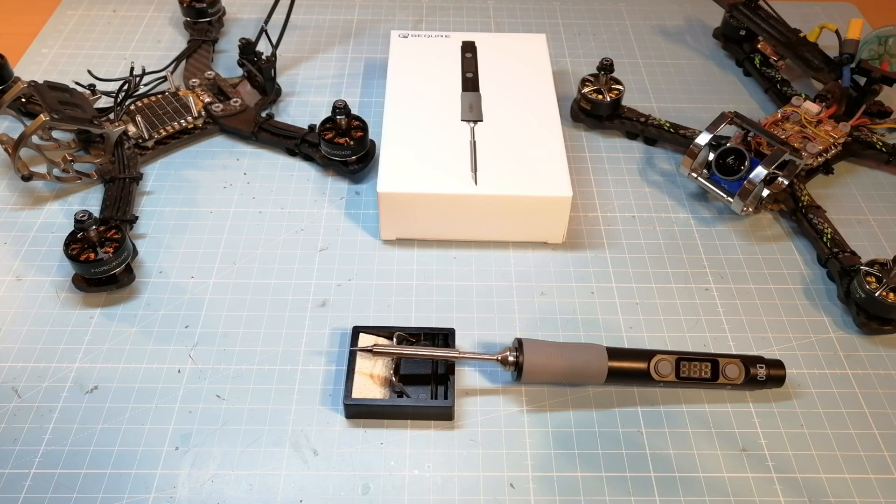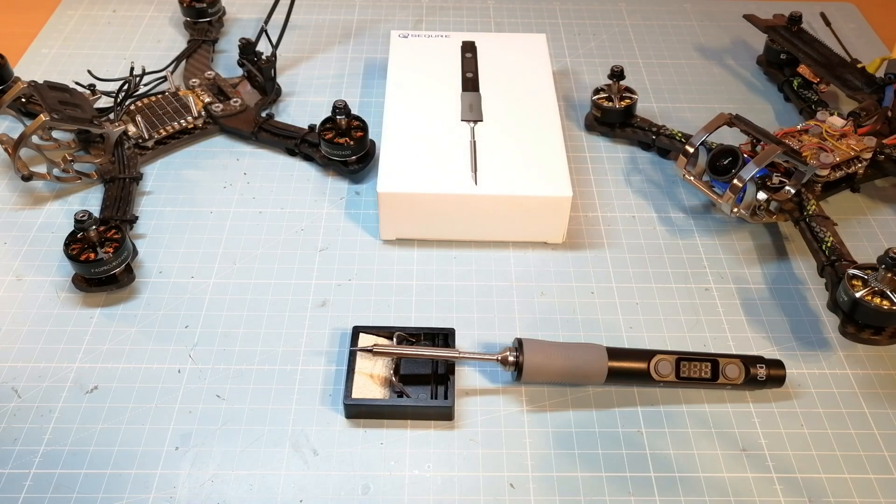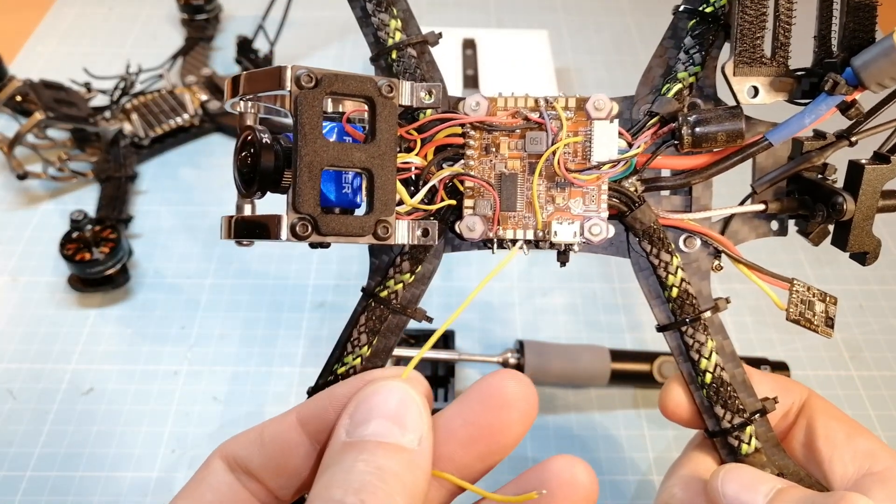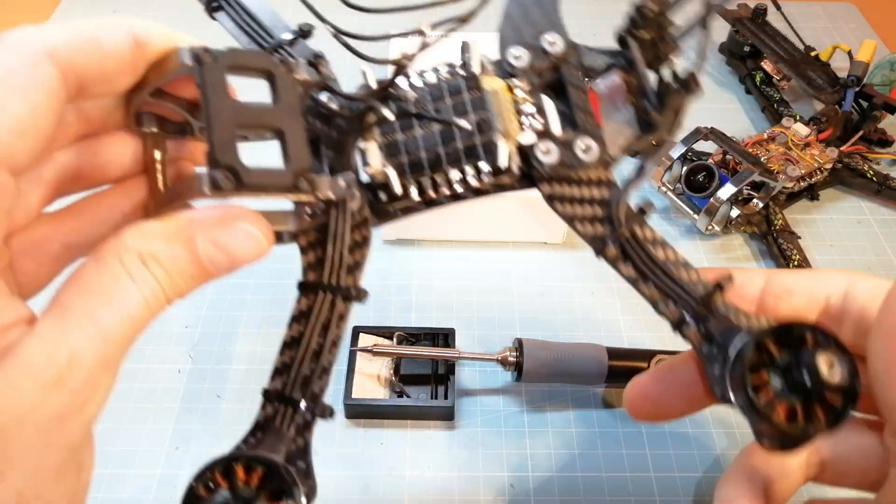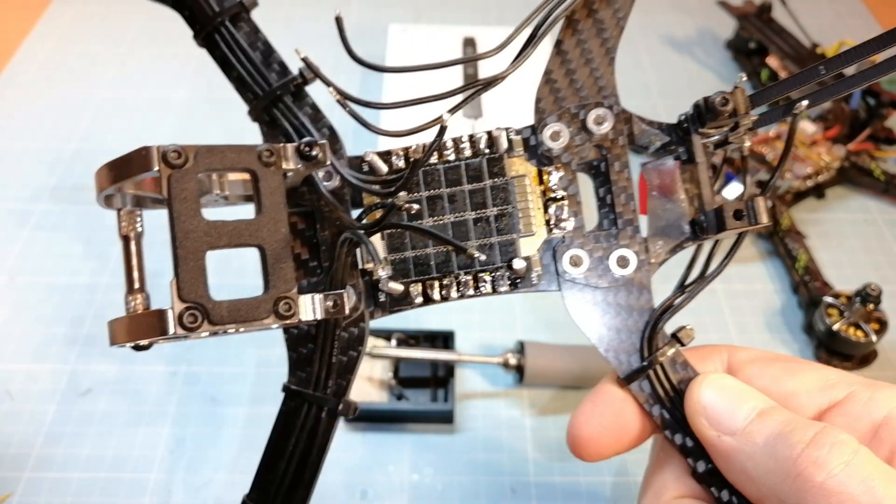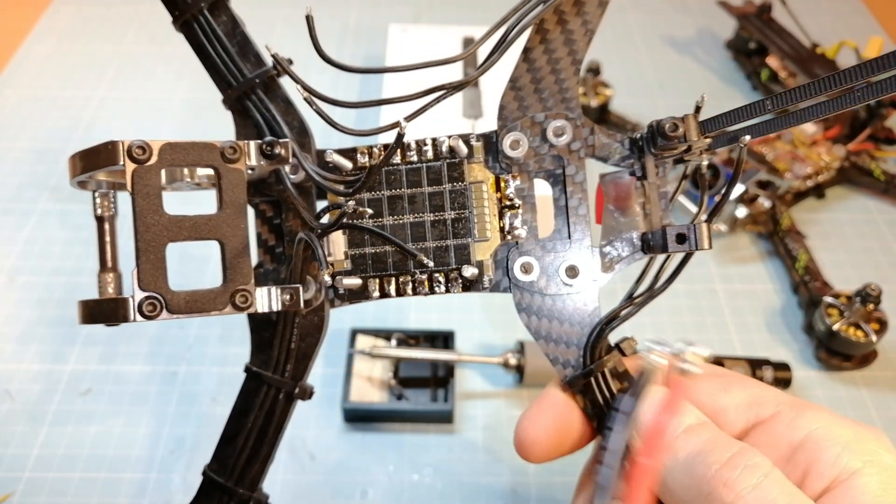Next I am going to do a few test solder works. First, I am going to solder a small wire on a flight controller. Then I will add motor wires on an ESC followed by a XT60 connector onto the power pads of a PDB.